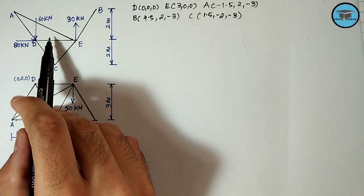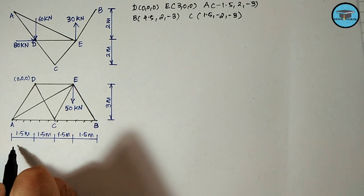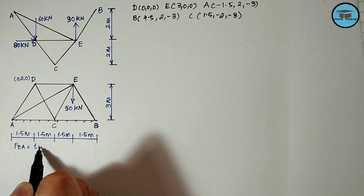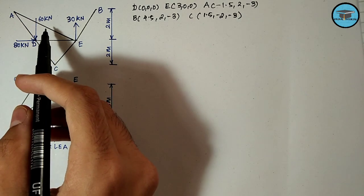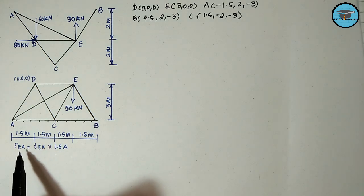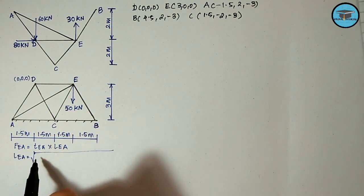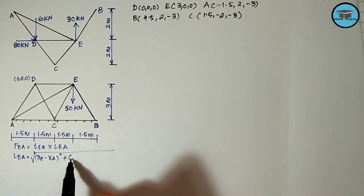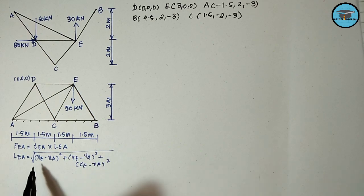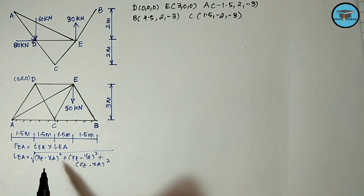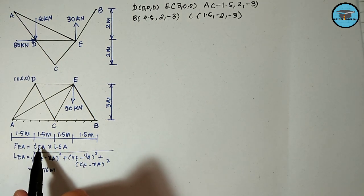The force in a member is given as the product of the tension coefficient in that member and the length of that member. We need to determine the force in member EA, so: Force_EA = t_EA × L_EA. If t_EA is positive, the force is tensile; if negative, it is compressive. The length of EA is given as the square root of (x_E - x_A)² + (y_E - y_A)² + (z_E - z_A)², which gives us L_EA = 5.76 meters.